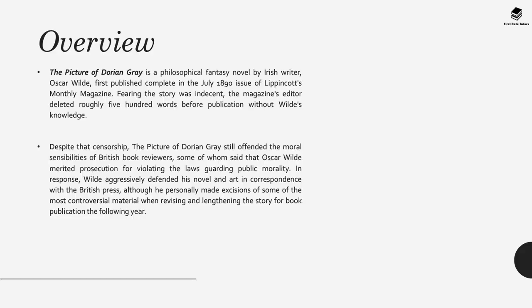The Picture of Dorian Gray is a philosophical fantasy novel by Oscar Wilde, first published in 1890 by Lippincott's Monthly Magazine. However, the editors feared the story was indecent, so the magazine's editor deleted roughly 500 words before publishing it without Wilde's knowledge. Despite this censorship, the book still offended the moral sensibilities of many British reviewers, and some said Wilde merited prosecution for violating laws regarding public morality. Wilde defended his novel but also made excisions before revising and lengthening the story for publication in 1891.